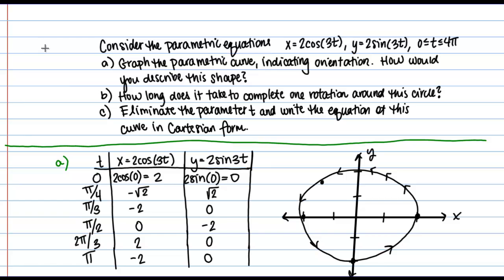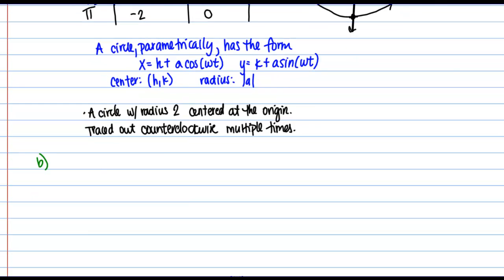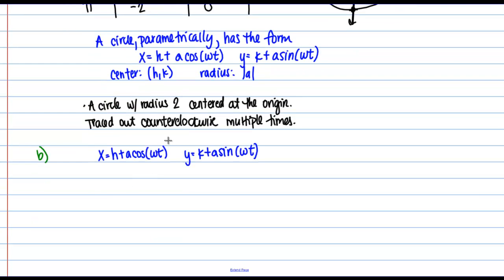So in part B we're asked how long does it take to complete one rotation around this circle? In other words, what interval or what is the length of T that it takes to go once around the circle?